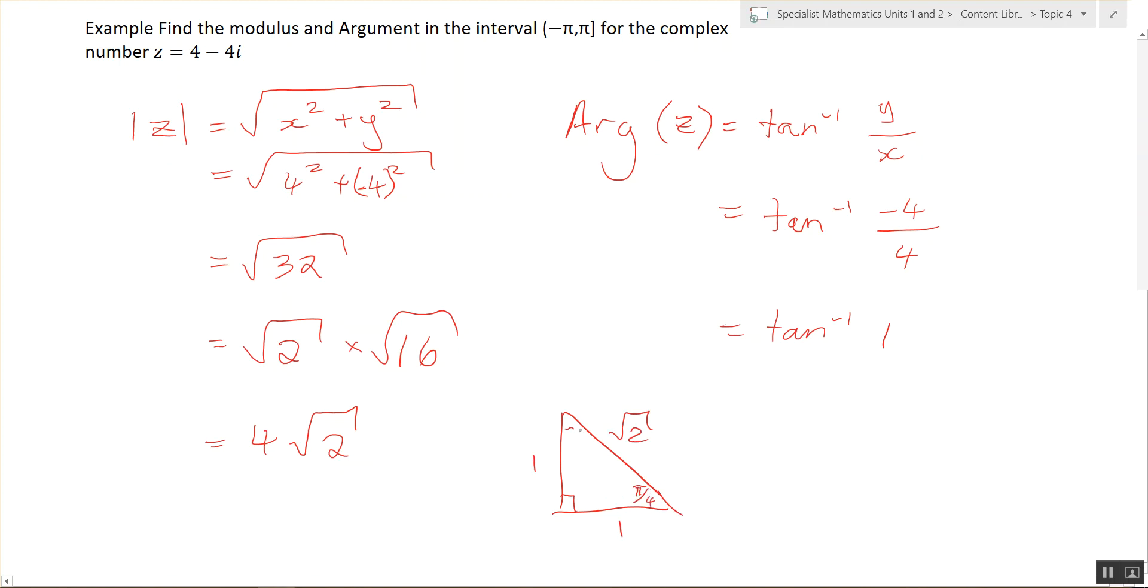And the angle is pi over 4. You would know it as 45 degrees. So what is tan negative 1, 1 equal to in radians? Pi over 4. Pi over 4.